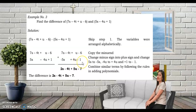After changing the signs of the terms of the subtrahend and changing minus to plus, you are now ready to combine the similar terms by following again the rules in adding polynomials.